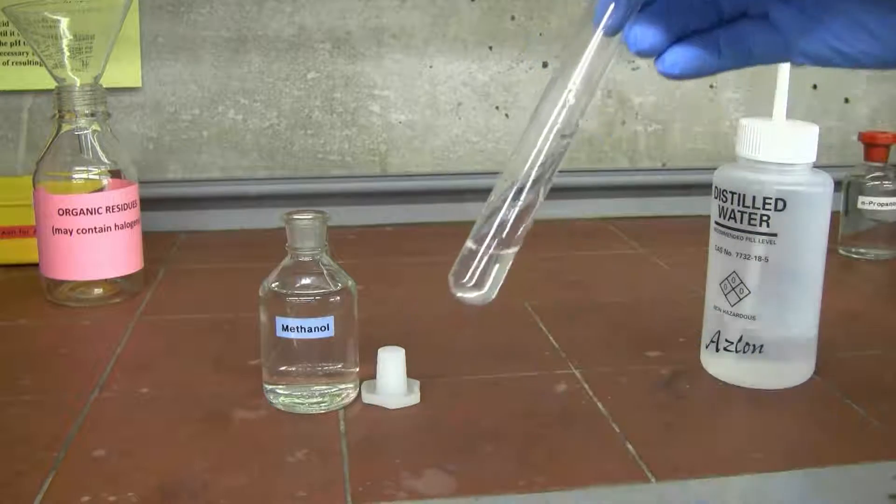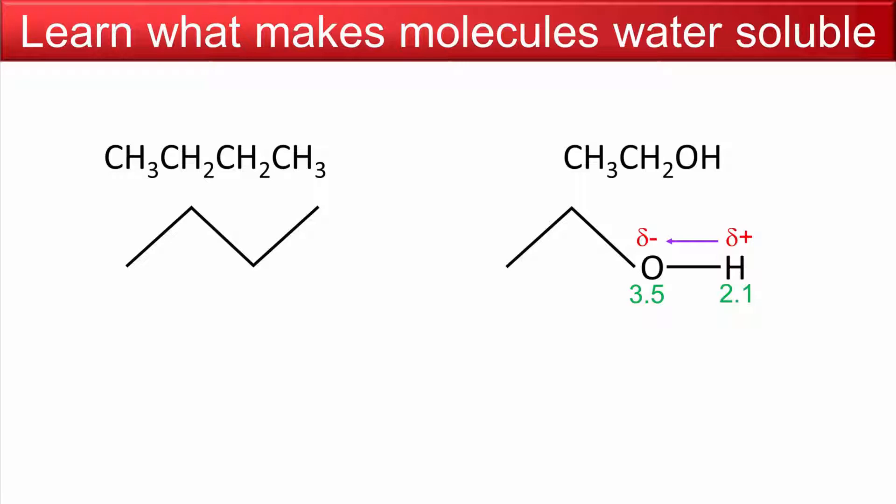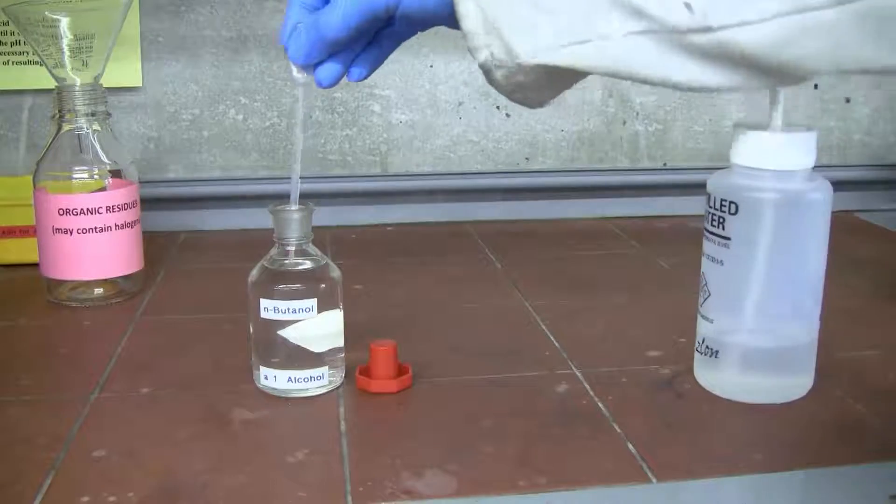When you add ethanol to water, something like this experiment here, you would expect them to dissolve—you would expect to just see one single layer of liquid form. As opposed to a molecule like this on the left of screen, I've got the molecule butane. Unlike ethanol, butane has no polar groups. It's all just carbon and hydrogen. They have a very small electronegativity difference, and that makes this a non-polar molecule, so we wouldn't expect it to dissolve in water.